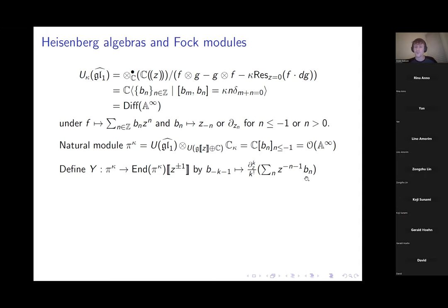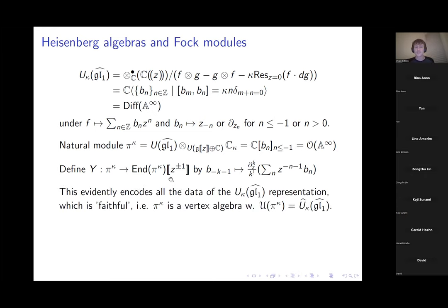We can formally write down a map sending the Fock module π_κ to endomorphisms of itself: for any element of π_κ, we write a formal infinite sum of the generators b_n with some indexing shift and division by k!. This map encodes all the data of the representation since all generators appear, and in some sense this representation is faithful — the vertex algebra structure captures that precisely.